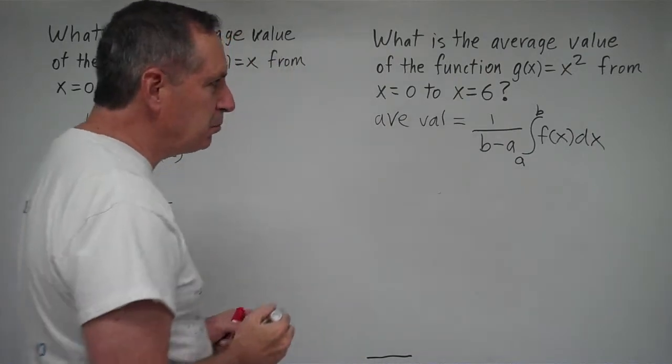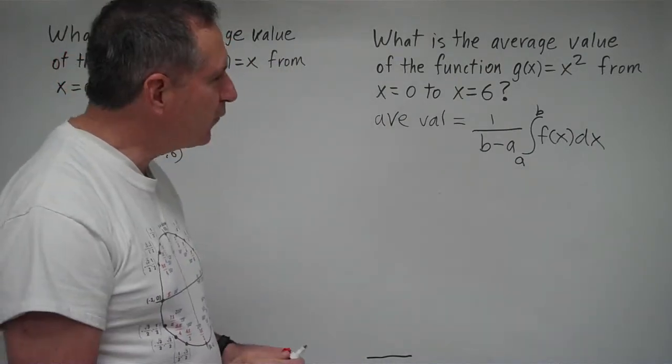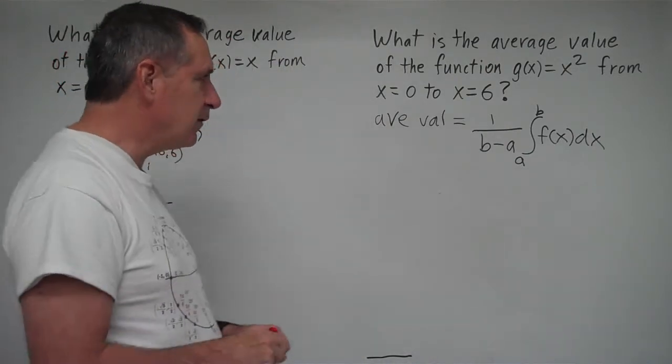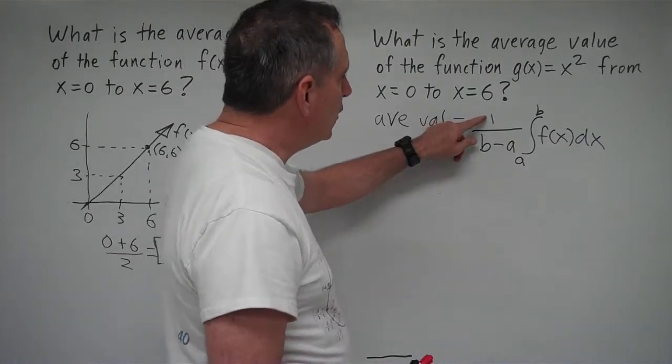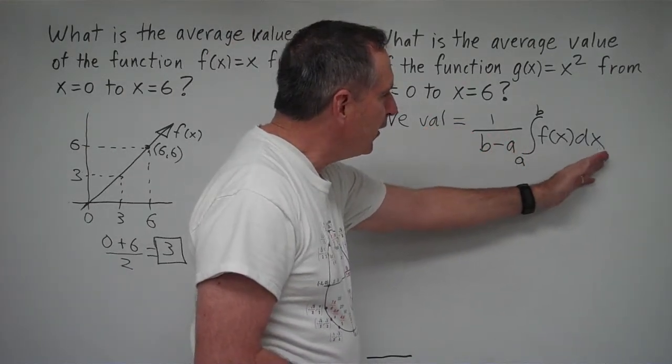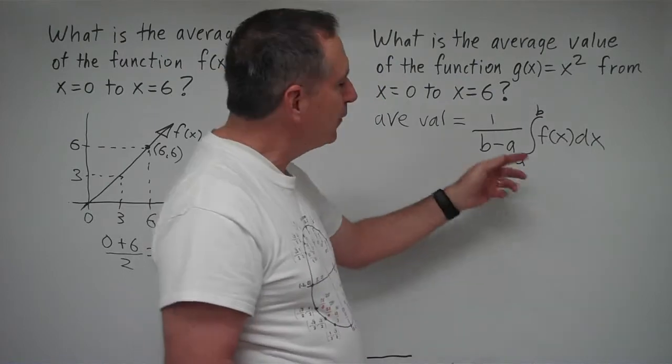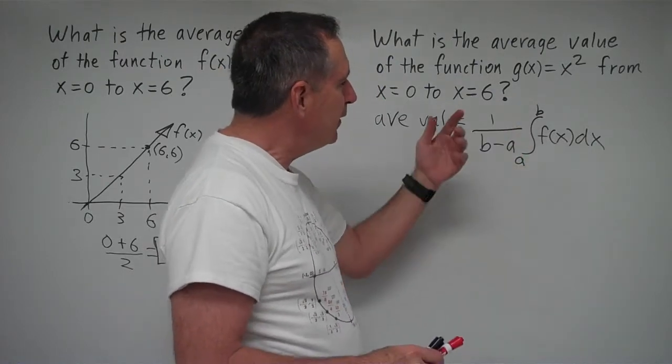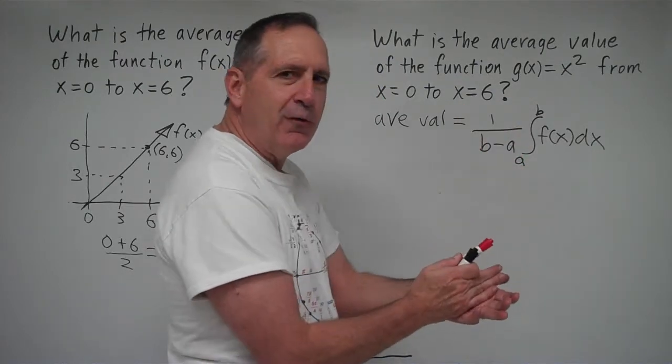And there's a little song that can help you remember what this formula is. It is this: 1 over b minus a times the integral of a function, integrate it from a to b. That's the average value.